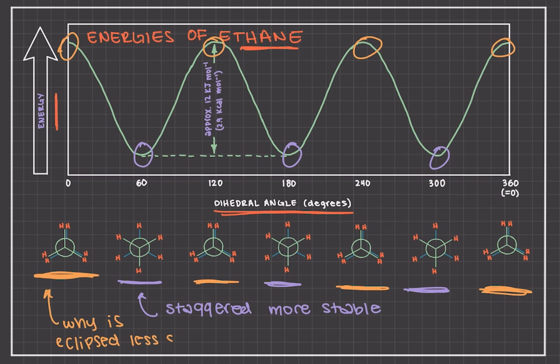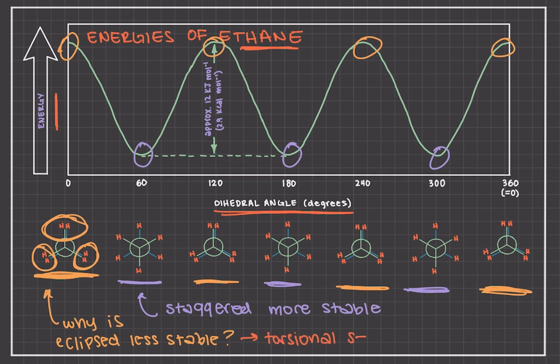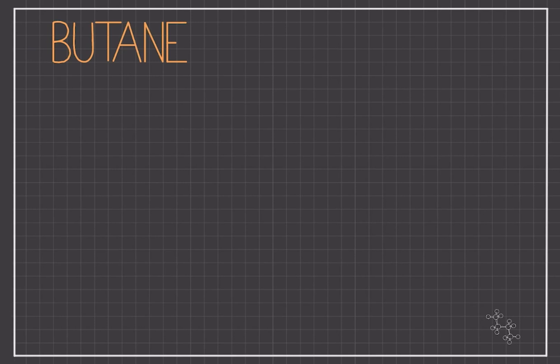But why is the eclipsed conformation of higher energy and relatively less stable? The main theory is that the bonding orbitals of the hydrogens on the front carbon interfere with those of the back carbon when eclipsed, because they overlap and are so close together. In this position the hydrogens repel each other since the bonds have a dihedral angle of zero degrees, making the repulsion greater in the eclipsed form. This repulsion is called torsional strain. More specifically, the repulsion is not really between the hydrogens themselves but between the electrons in the bonds of the hydrogens.